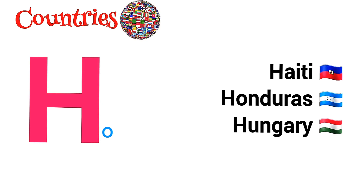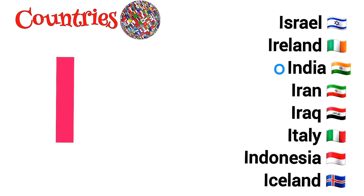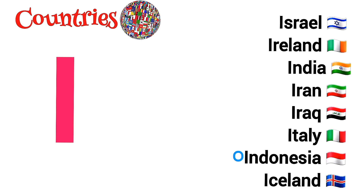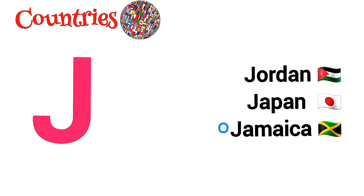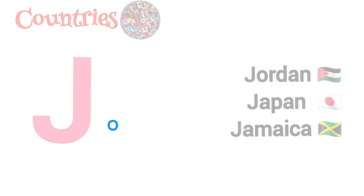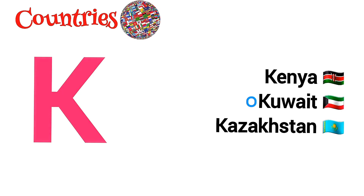H is for Haiti, Honduras, Hungary. I is for Israel, Ireland, India, Iran, Iraq, Italy, Indonesia, Iceland. J is for Jordan, Japan, Jamaica. K is for Kenya, Kuwait, Kazakhstan.